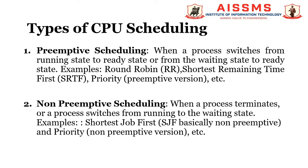In non-primitive scheduling, when a process terminates or switches from running to the waiting state, the scheduling type is termed non-primitive. Once the CPU cycles are allocated to a process, the process holds the CPU till it gets terminated. It does not interrupt a running process in the middle of execution; instead, it waits till the process completes its CPU burst time before allocating the CPU to another process. Examples include shortest job first, SJF non-primitive, and priority-based non-primitive CPU scheduling algorithms.